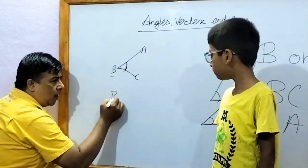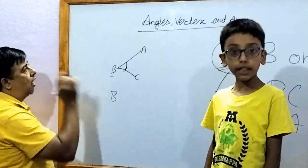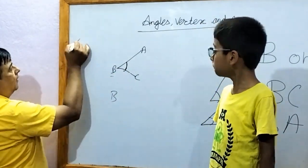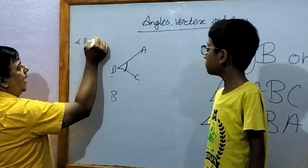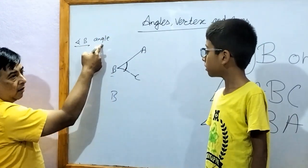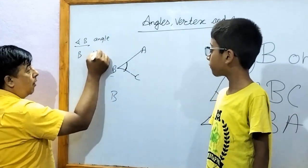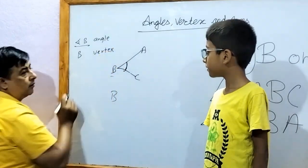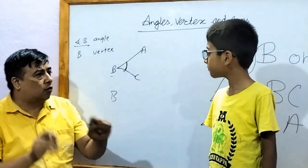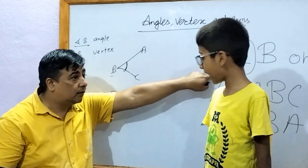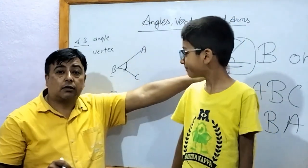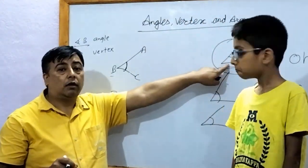Then, this point B is the vertex. In this figure, angle B is the angle, and B is the vertex. It means that for the vertex, it is not necessary to write the angle symbol. But for the angle, you must write the angle symbol.